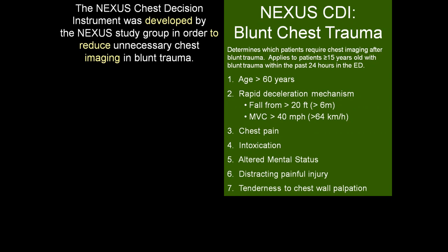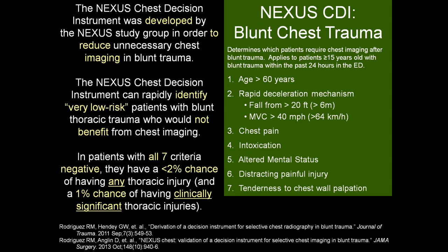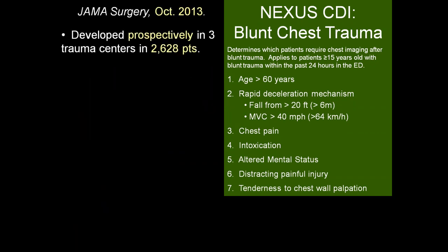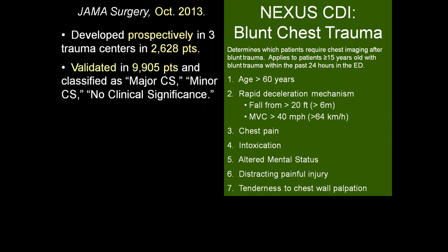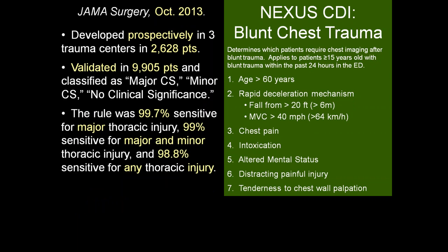This rule was developed by the Nexus group to reduce unnecessary chest imaging in blunt trauma. The Nexus chest decision instrument can rapidly identify very low-risk patients who would not benefit from chest imaging. In patients who have all seven criteria negative, there is less than a 2% chance of any thoracic injury and a 1% chance of clinically significant thoracic injury. Published in JAMA Surgery October 2013, it was developed prospectively at three separate trauma centers in roughly 2,500 patients and validated in almost 1,000 patients. The rule was 99.7% sensitive for major thoracic injury and roughly 99% sensitive for any thoracic injury.